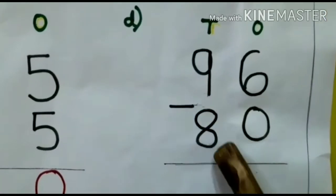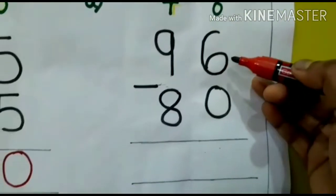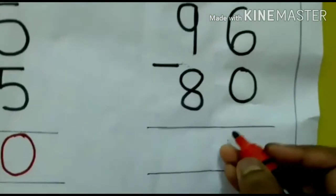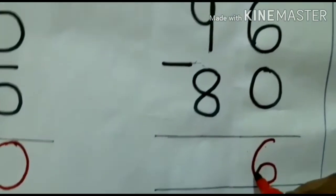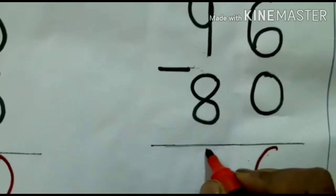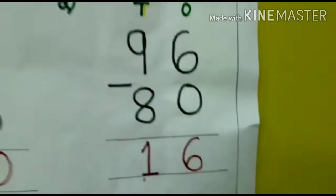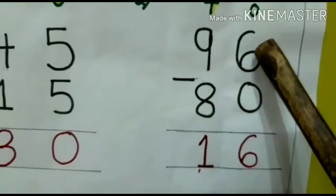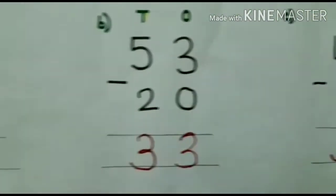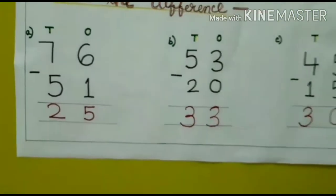Question D: I have to subtract 80 from 96. In ones place I have 6 and 0. We know that if we subtract 0 from any number the answer will be the number itself, so 6. From 9 if I subtract 8 I will get 1. So if I subtract 80 from 96, I get the answer 16. Understood children? Subtraction of 2 digit numbers without borrowing.